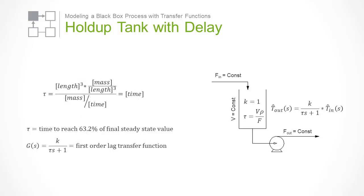Notice that tau has units of time. Tau is called the time constant, and, in a first-order process, is the amount of time that it takes the process to reach 63.2% of its steady-state value when a step change is applied.